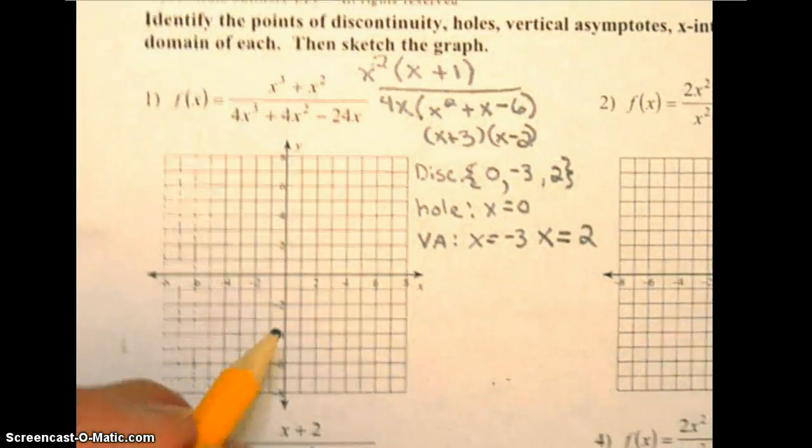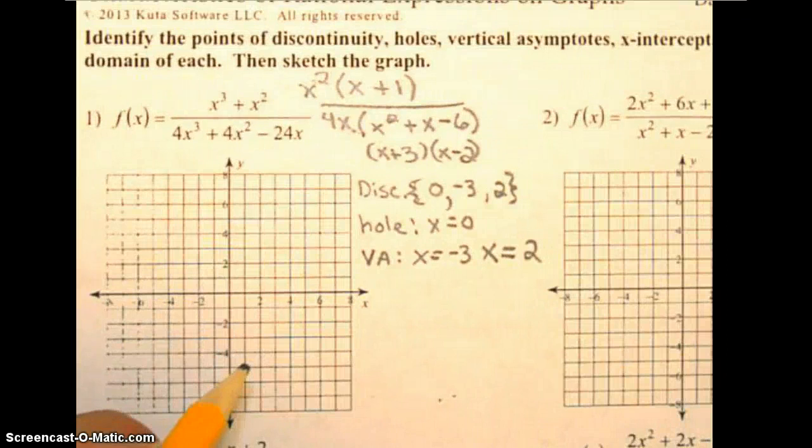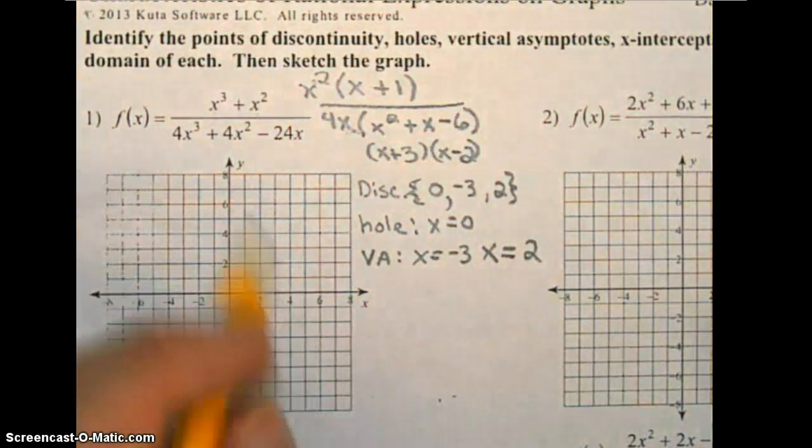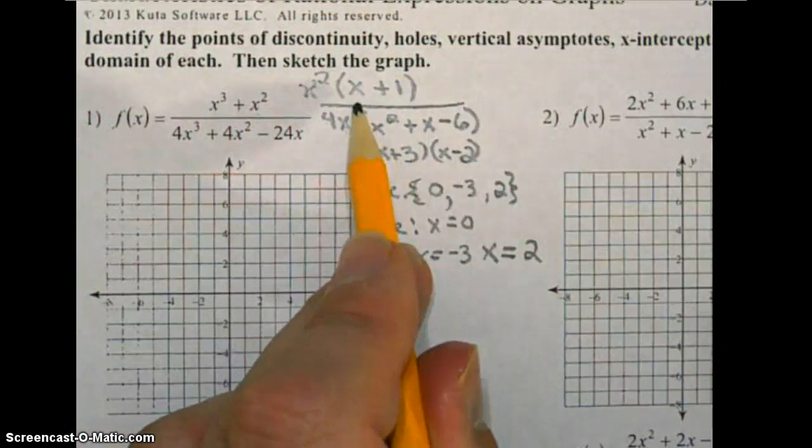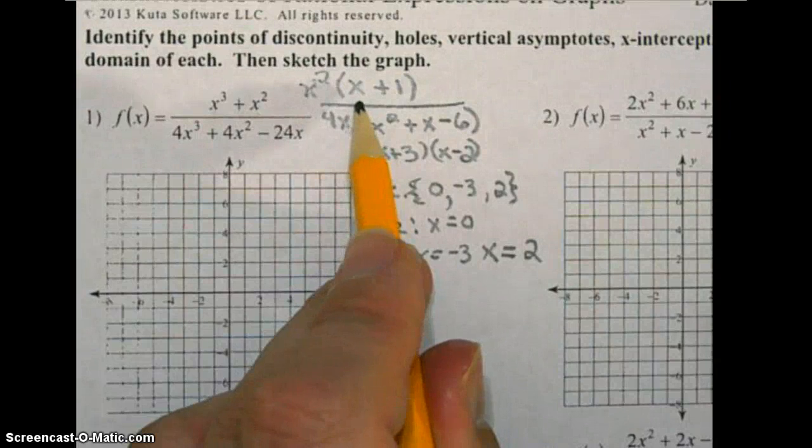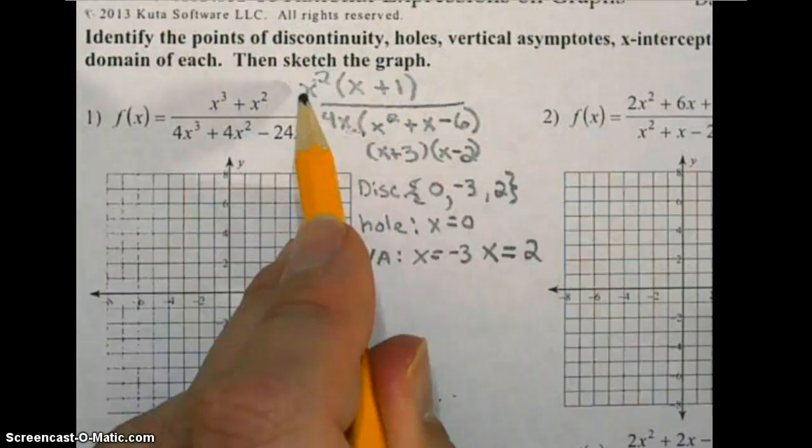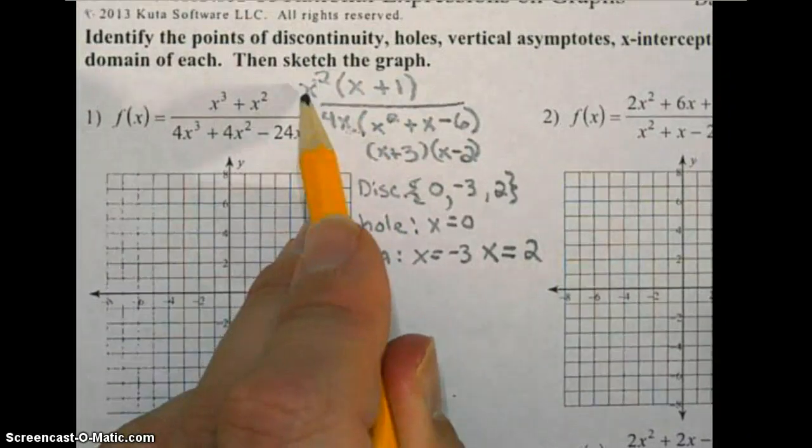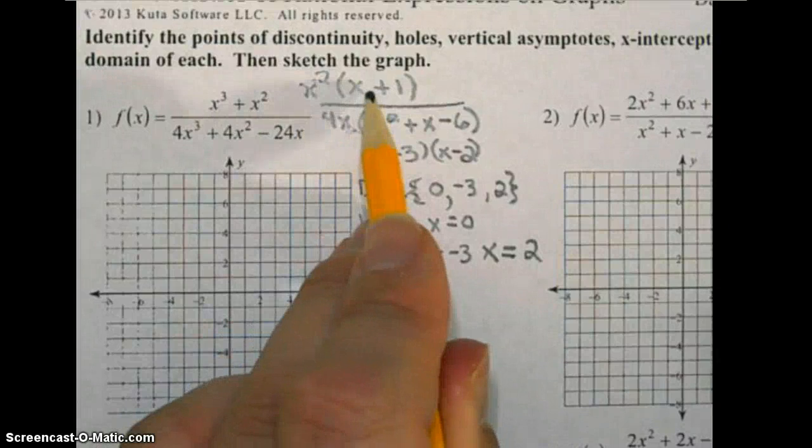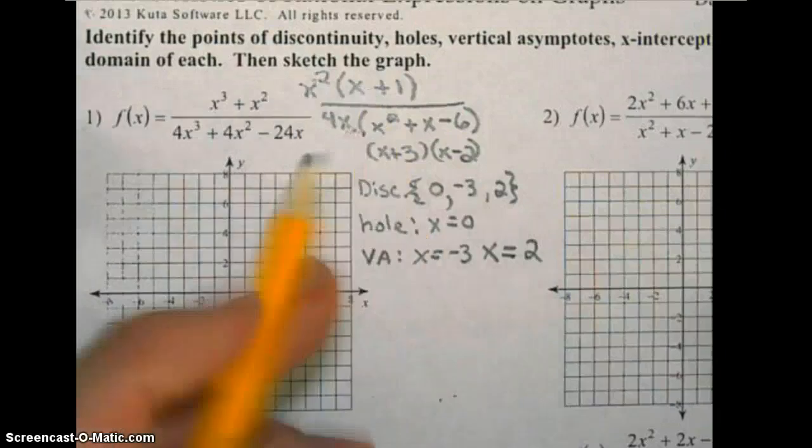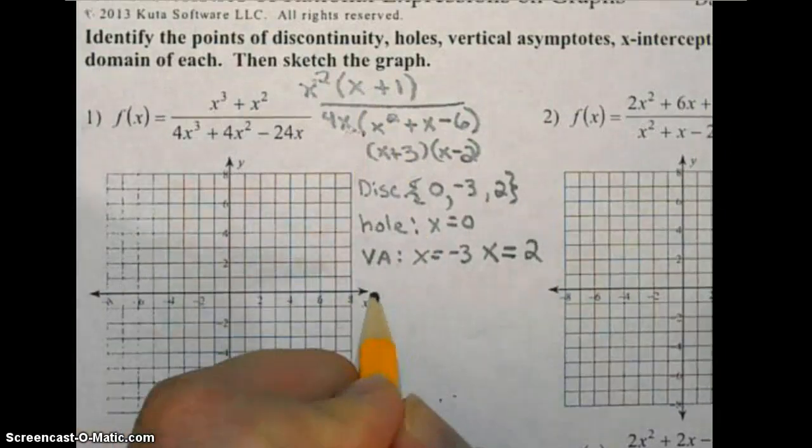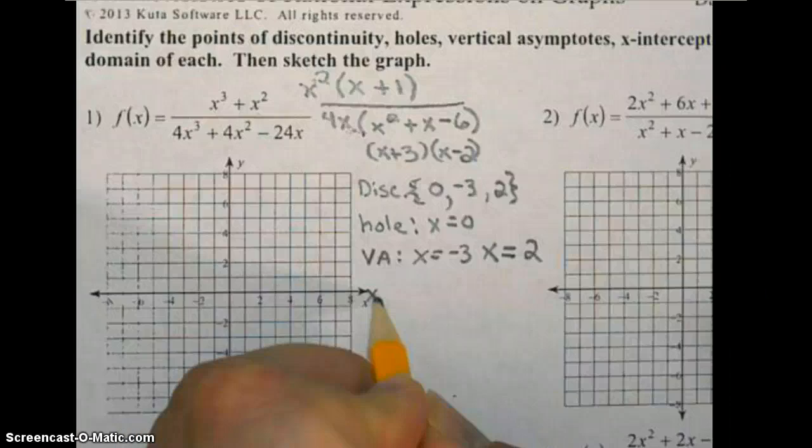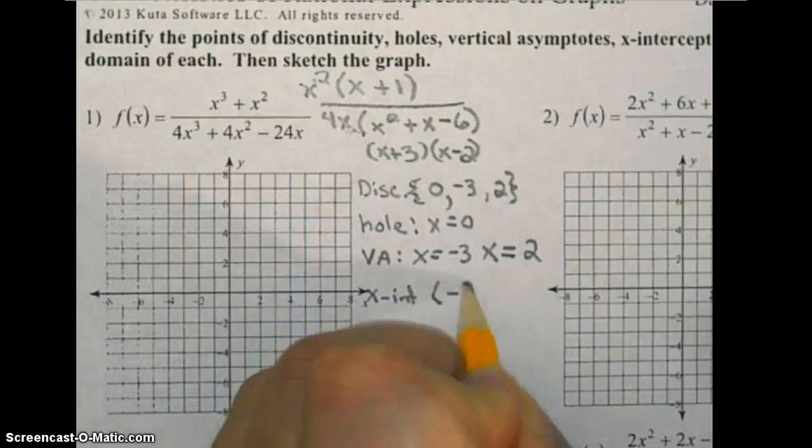The next thing we need to find are the x-intercepts. The x-intercepts are found by setting the numerator equal to zero. Since this is a hole, we do not set that equal to zero, we set this factor equal to zero and solve. So we have an x-intercept at (-1, 0).